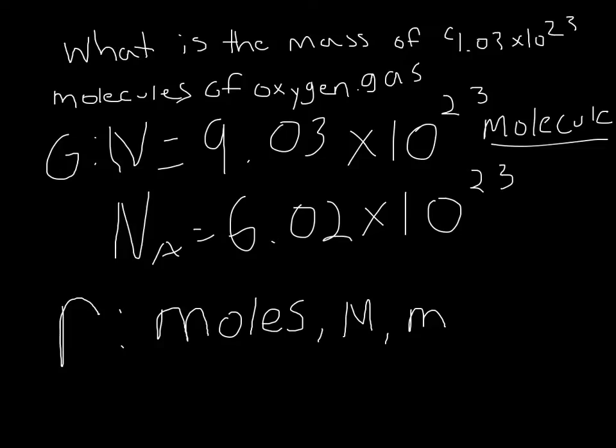The given is that we have 9.03 times 10 to the 23rd molecules. We know that Avogadro's number is 6.02 times 10 to the 23rd. Now we can determine the number of moles and the mass.